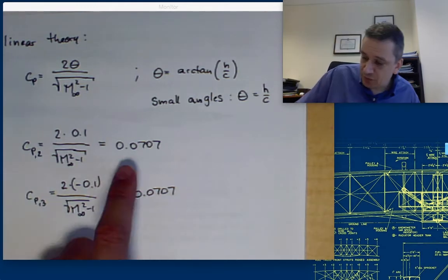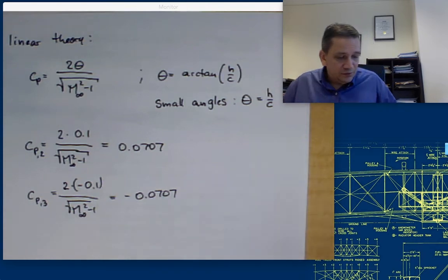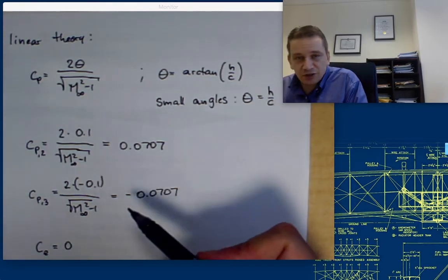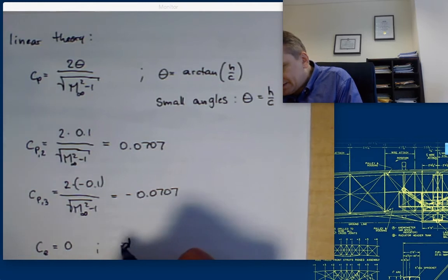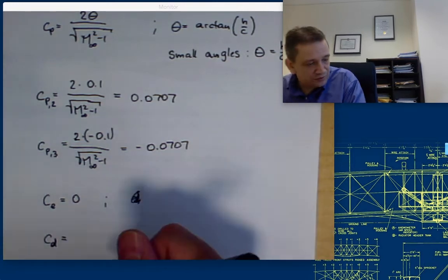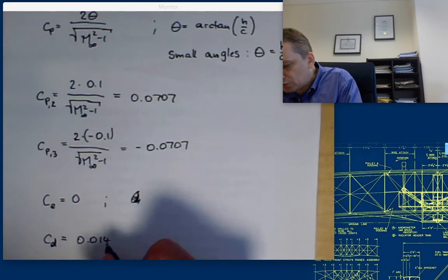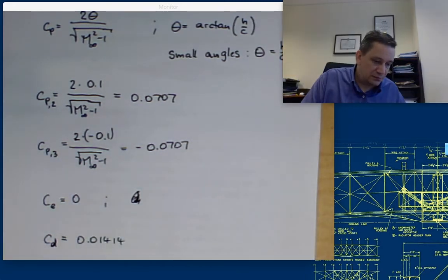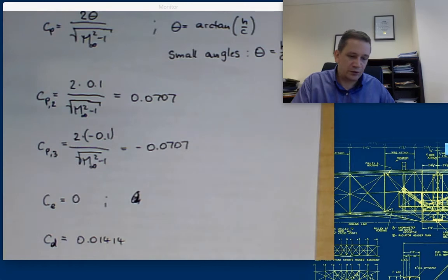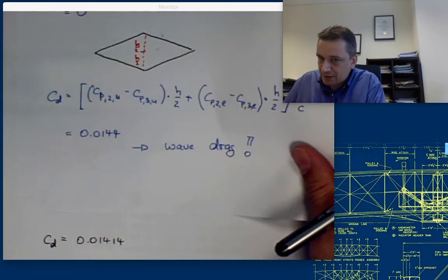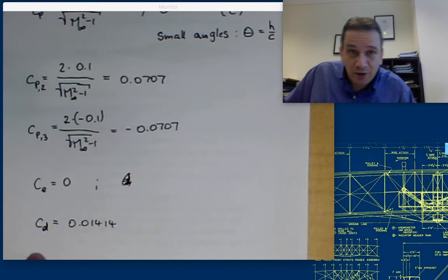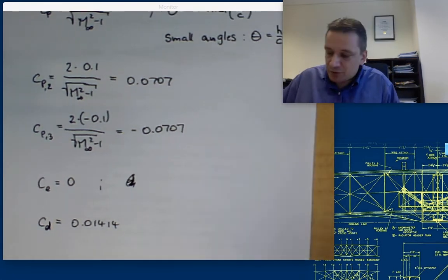So you see there are some differences compared to the polynomial theory. But if we now calculate the drag coefficient and the lift coefficient: Cl of course is going to be 0 again — there is no pressure difference between the upper and lower side. And so the drag Cd, if you add that up, is going to be 0.01414. That is actually quite similar to the drag coefficient calculated before, which was 0.0144. Now with linear theory it's 0.01414.